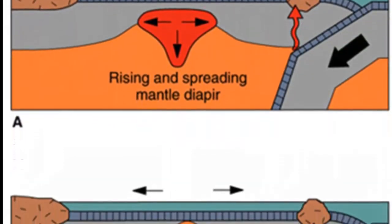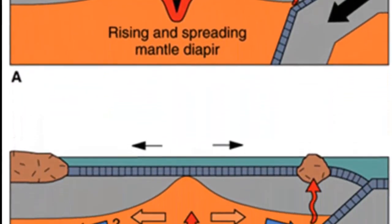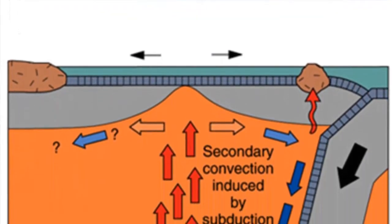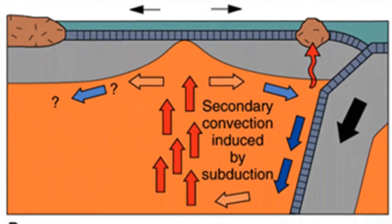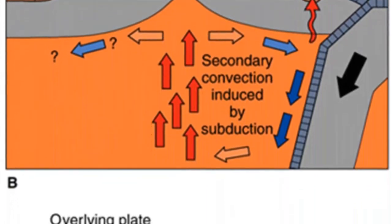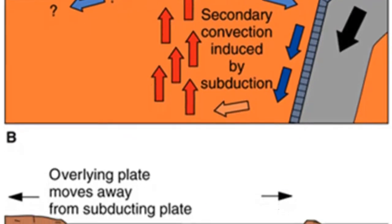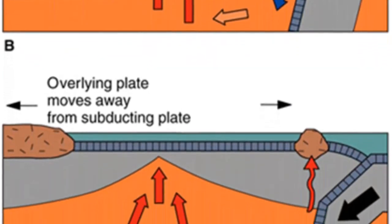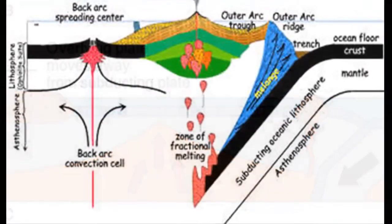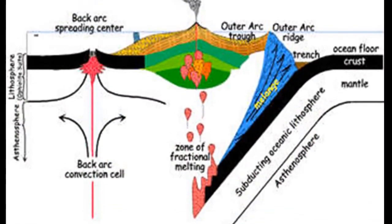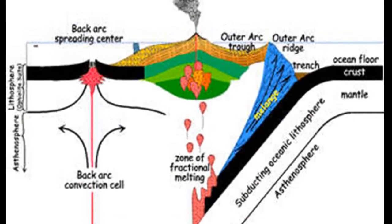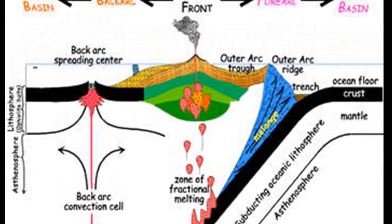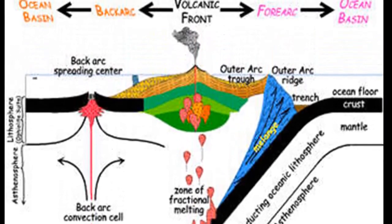The age of the subducting oceanic slab is thought to play a significant role in determining the dominant forces acting on the overriding plate. Recall that when a relatively cold, dense slab subducts, it does not follow a fixed path into the asthenosphere. Rather, it sinks vertically as it descends, causing the trench to retreat or roll back.